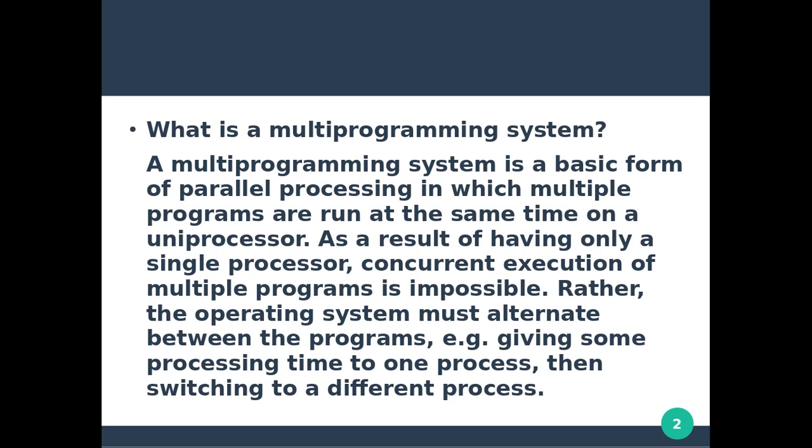With multiple processors, concurrent execution is possible, but with a single processor, concurrent multiple programs is impossible. Rather, the operating system must alternate between the programs — the operating system alternates multiple programs.